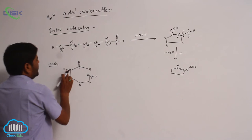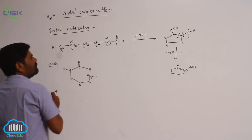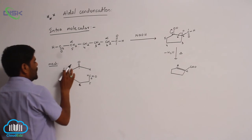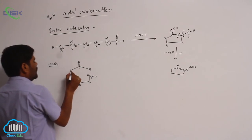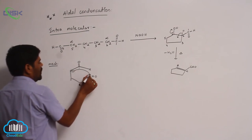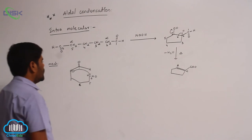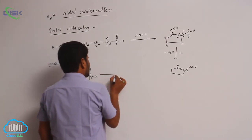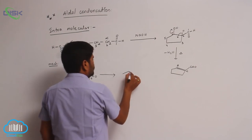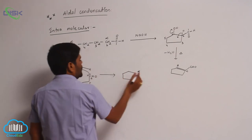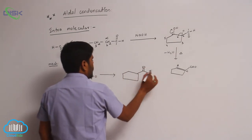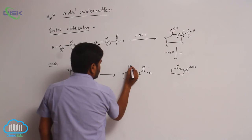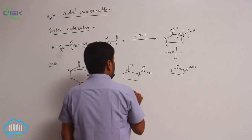The carbanion attacks here. The sixth carbon carbanion is generated, with a negative charge. This negative charge attacks the carbonyl carbon. The first and sixth carbons are joined. The first carbon aldehyde remains as it is. The second and sixth carbons join together. Now, just hydrolysis followed by heating gives the product compound.